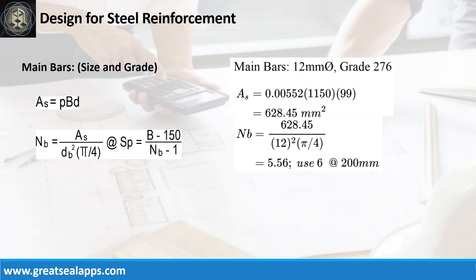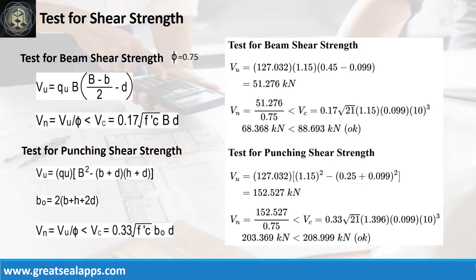The number of bars for 12 mm bar is 6. The factored beam shear force is 51.276 kN. The nominal force is 68.368 kN, which is less than the concrete capacity of 88.693 kN. The factored punching shear force is 152.527 kN.